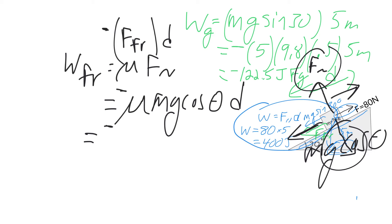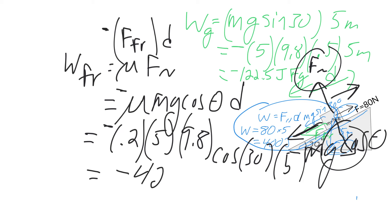So my coefficient was 0.2, mass was 5, gravity is 9.8, cosine of 30, that's like 0.86 or something, and then times 5. But we'll go ahead and plug it in the calculator to get it all. So I'm getting negative 42.4. So go ahead and double check my calculation, make sure I did that right. That's joules.